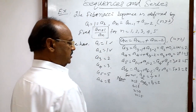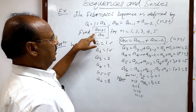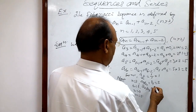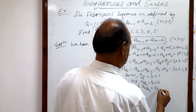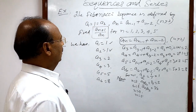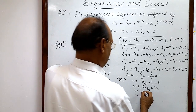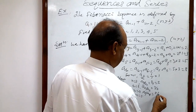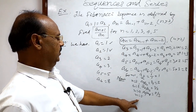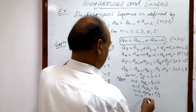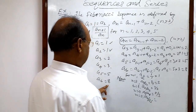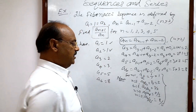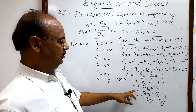For n = 3, the ratio is a4 / a3. a4 is 3 and a3 is 2, so this equals 3/2. For n = 4, the expression is a5 / a4. a5 is 5 and a4 is 3, so the answer is 5/3. For n = 5, the expression becomes a6 / a5. a6 is 8 and a5 is 5, so the answer is 8/5.